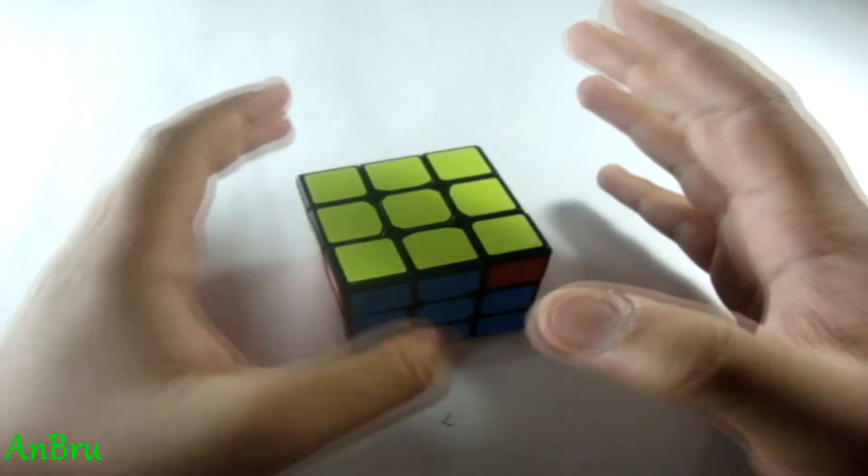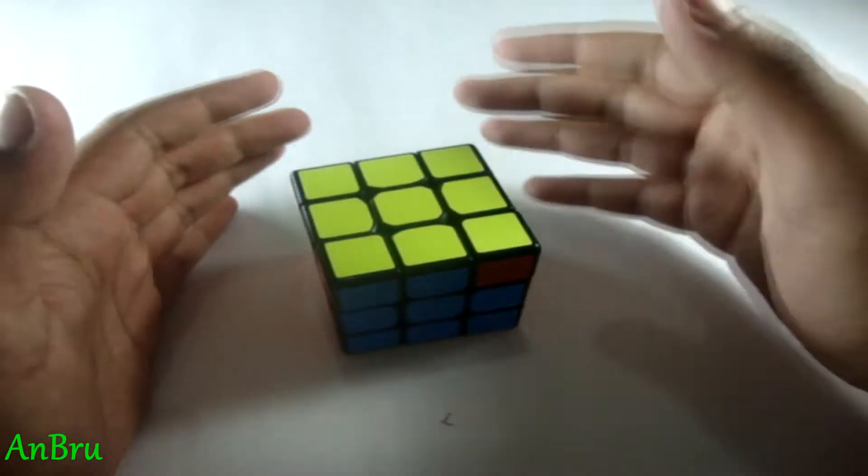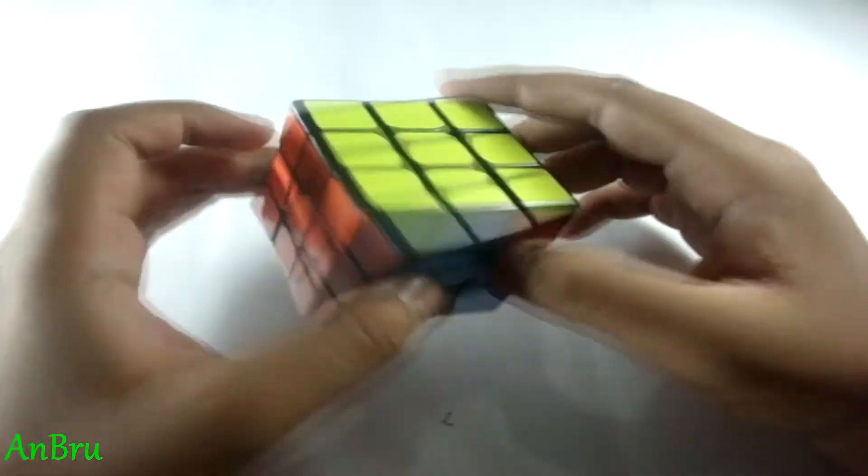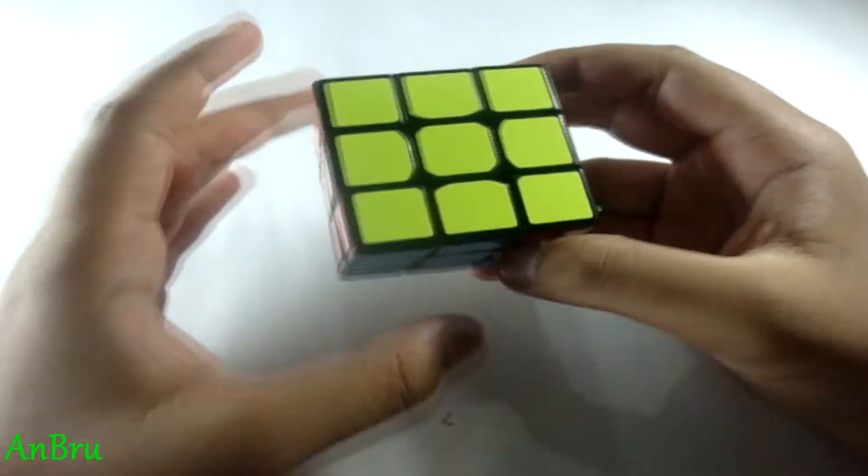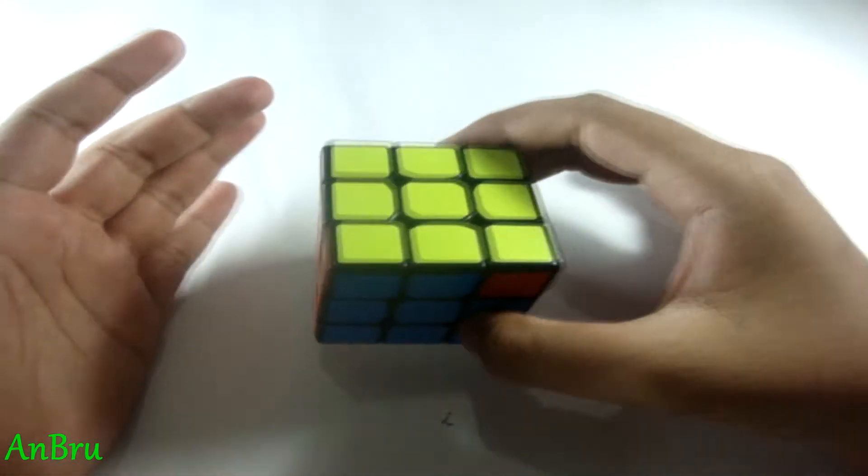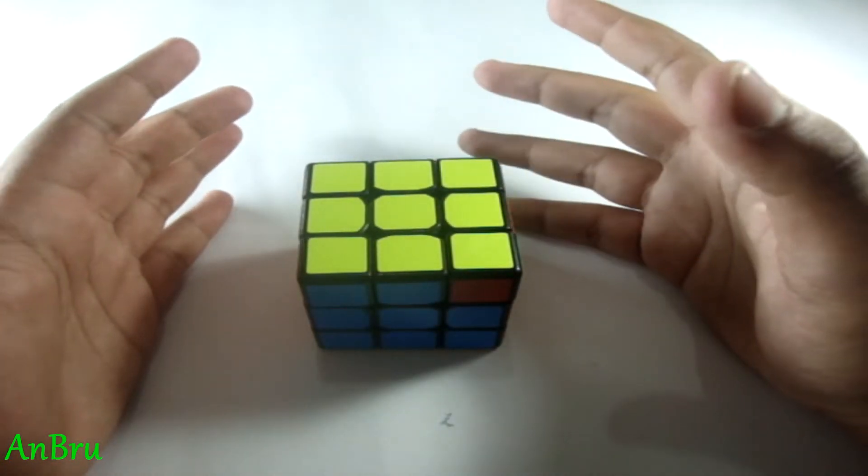It is basically your TPS that decides how much time you get on this T-perm, because it is a pretty easy case and you don't need a specific type of finger trick for this.